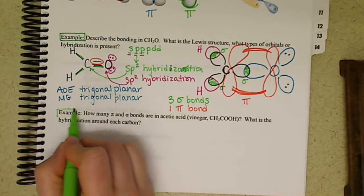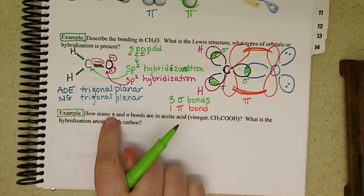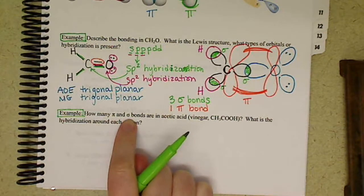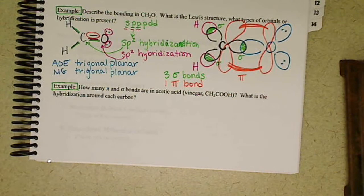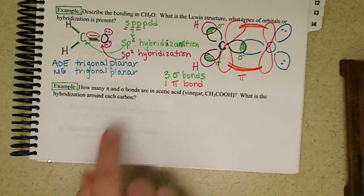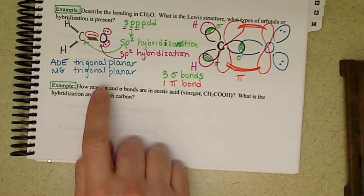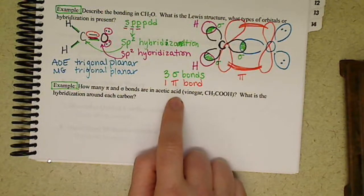All right, let's look at an example, just looking at counting our pi and sigma bonds, and then we'll make our life, we'll take a complicated molecule, give us a challenge, make sure we can count, which you all know, on a good day I might be able to count. All right, so we want to know how many sigma and pi bonds are in acetic acid.